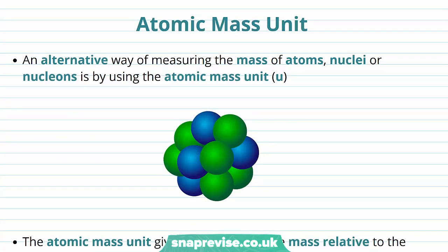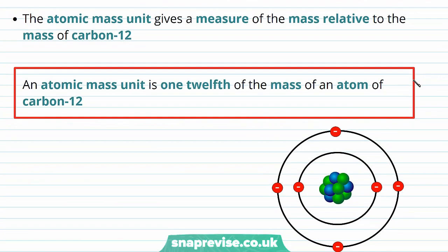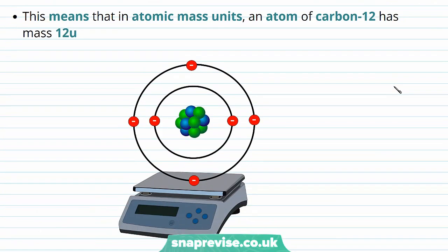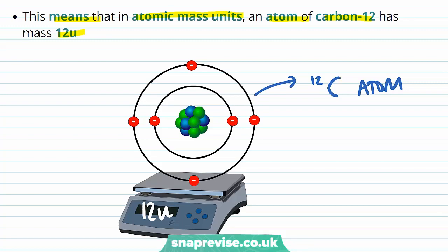Now we're going to find something called the atomic mass unit. An alternative way of measuring the mass of atoms, nuclei, or nucleons is by using the atomic mass unit u. The atomic mass unit gives a measure of mass relative to the mass of carbon-12. It is defined as one twelfth of the mass of an atom of carbon-12, which means that a carbon-12 atom has a mass of 12u in atomic mass units.